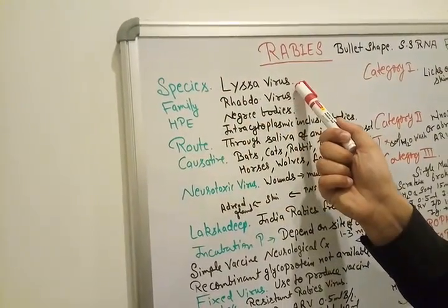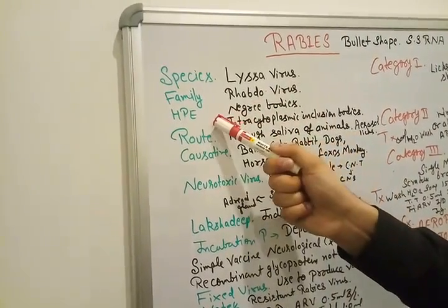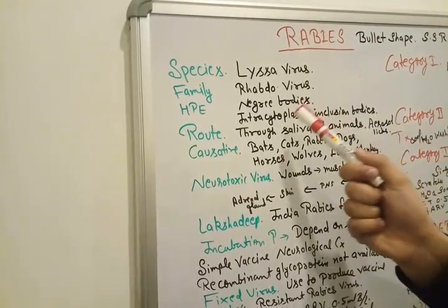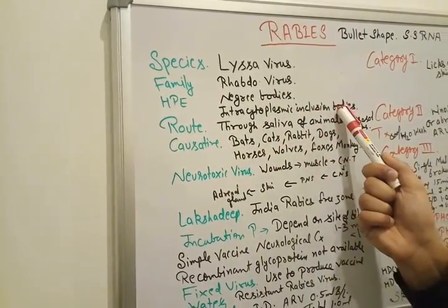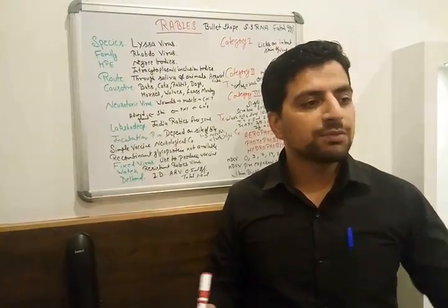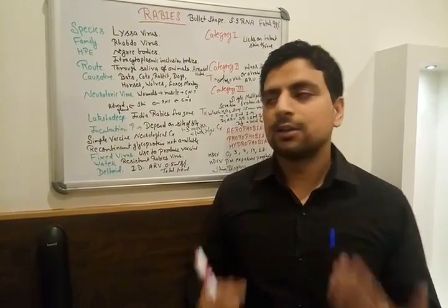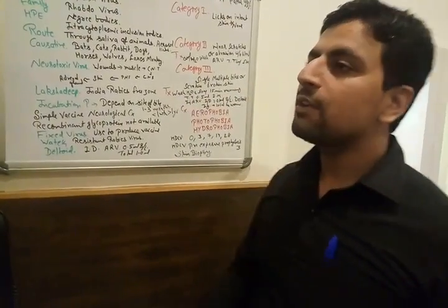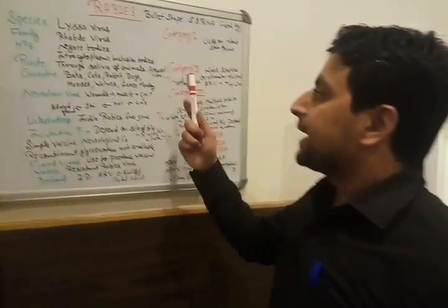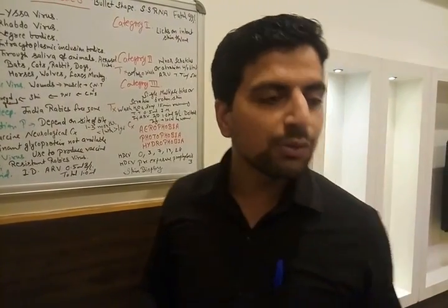The species is Lyssavirus and family is Rhabdoviridae. On histopathological examination we see Negri bodies — intracytoplasmic inclusion bodies. The route of transmission is through the saliva of animals, and aerosol is also a causative route.